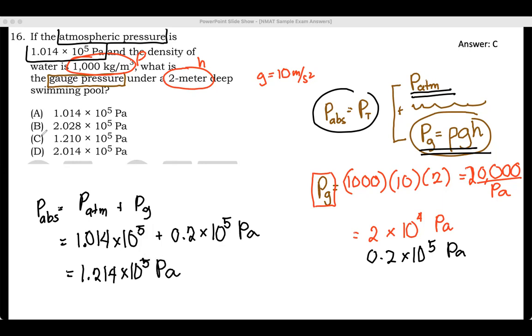And that is letter C, which is the answer here. But this is actually wrong. They should not be looking for the gauge pressure. They should be looking for the absolute pressure, or the total pressure, to have this answer. So this is a correction of this problem—the absolute pressure or the total pressure.